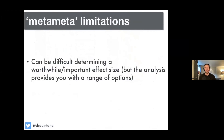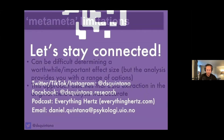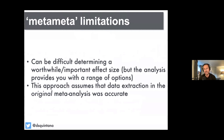There are a few limitations with the package. It can be difficult to determine what a worthwhile or important true effect size is, but at least the analysis gives you a range of options. This approach also assumes — if you're extracting data straight from published meta-analyses — that the original meta-analysis is accurate. We've all seen instances where there are clear errors in what's been reported in meta-analyses, with numbers that simply don't make sense. So there is a risk that you're extracting incorrect data, though of course you could go in and recalculate these numbers yourself.